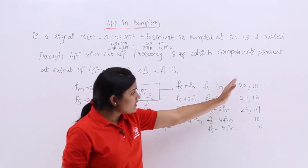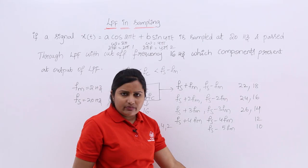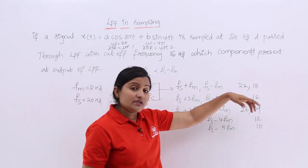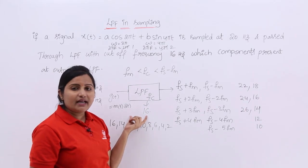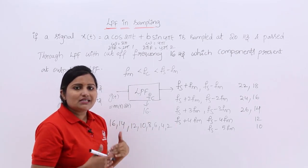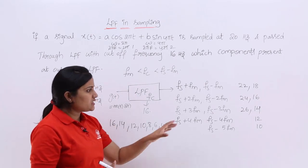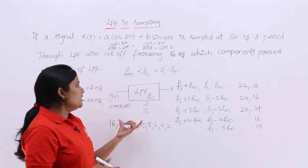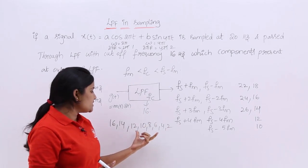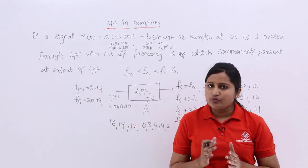We have so many frequency components — we can see 26, 28, 30, 32, and so on — but all those higher frequency components are eliminated by the LPF. The cutoff frequency of your LPF is 16 Hz, so frequencies higher than 16 Hz are filtered out. Finally, for this problem, the frequency components available at the output of the LPF are: 16, 14, 12, 10, 8, 6, 4, and 2 Hz. These are the frequency components available at the output of the LPF.